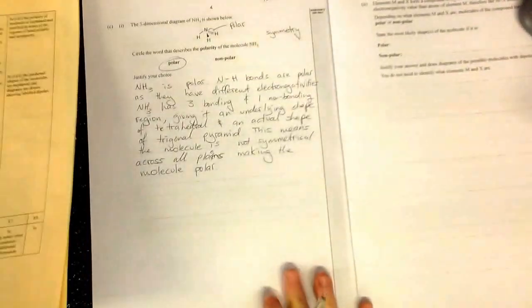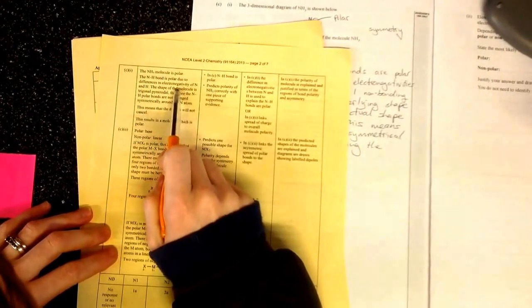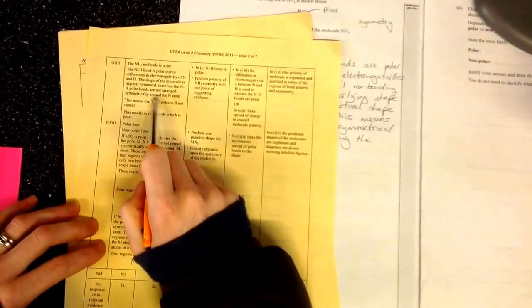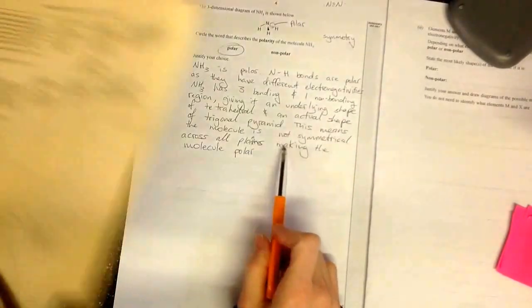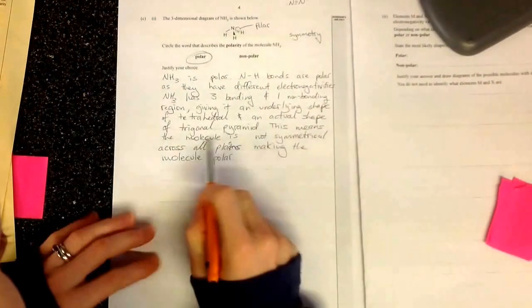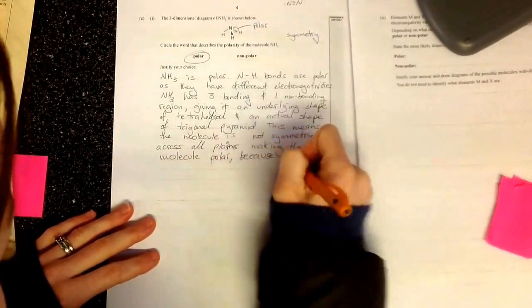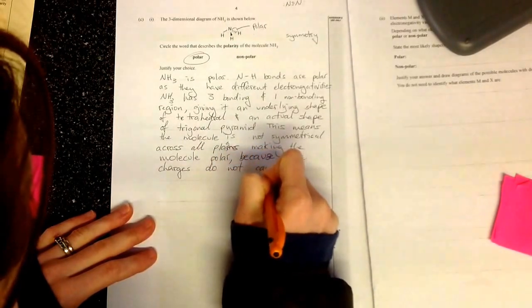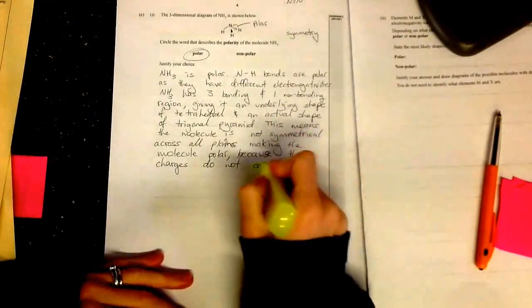Here is the answer schedule. It's polar. NH bond is polar because of the difference in electronegativity. Shape is trigonal pyramidal or trigonal pyramid. Therefore, they are not arranged symmetrically. This means the dipoles will not cancel. I did not mention about the dipoles not canceling. Let's just add that. Molecules are not symmetrical, making the molecule polar because the charges do not cancel out. That is an important thing to mention about the canceling out of charges.